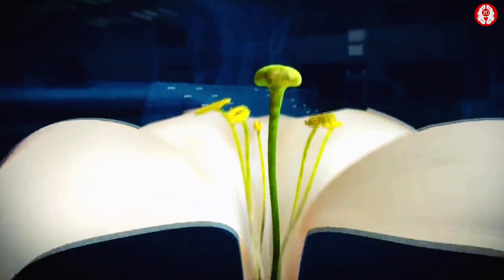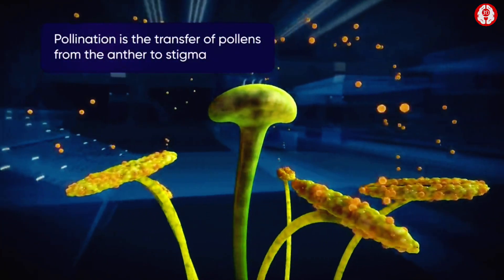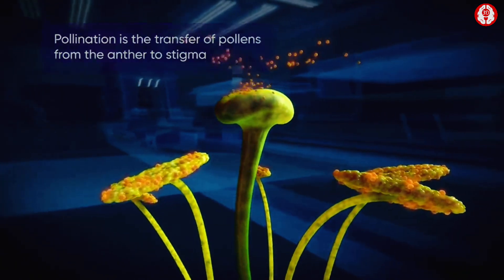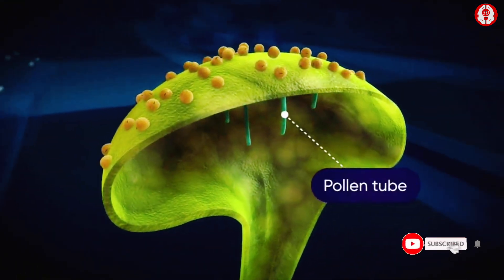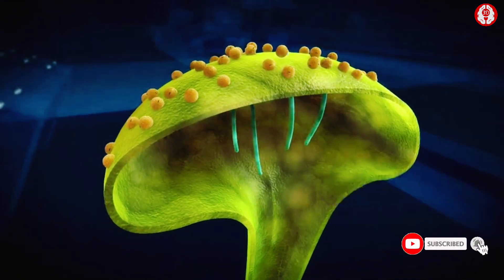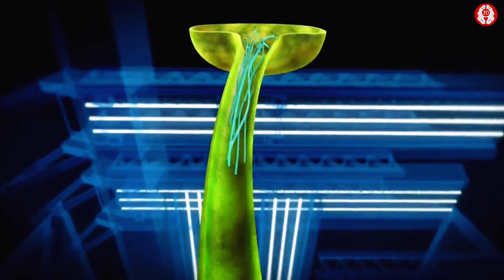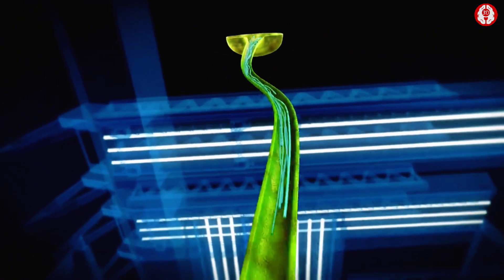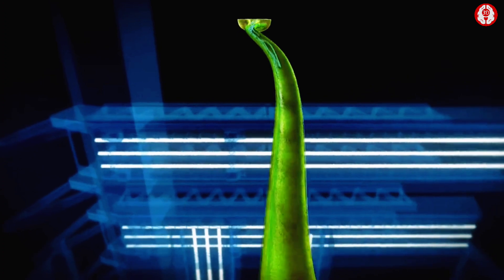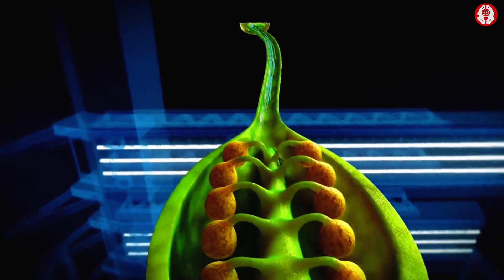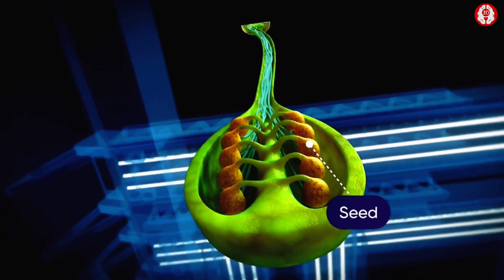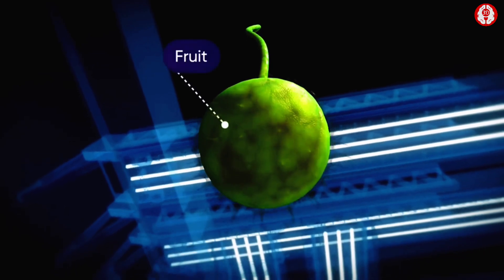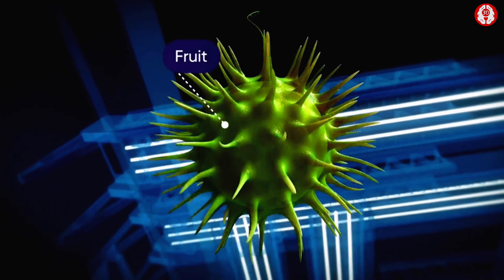After pollination, pollen tubes form which travel through the style to reach the ovary, and then the process of fertilization occurs. This produces seeds. The ovary also modifies to form the fruit.